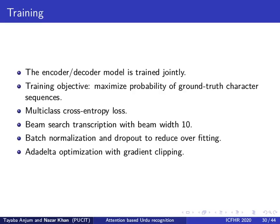Let us now describe the training procedure. The encoder-decoder model was trained jointly to maximize the probability of ground truth character sequences by minimizing multi-class cross-entropy loss. The optimal output character sequence was transcribed using beam search with beam width 10. Batch normalization and dropout were used to reduce overfitting, Ada-delta optimization was used with gradient clipping, and model and hyperparameter details can be found in the paper.